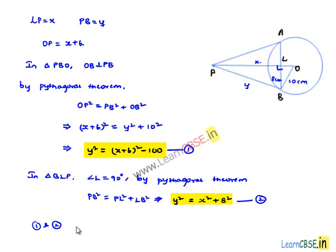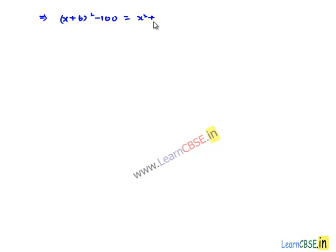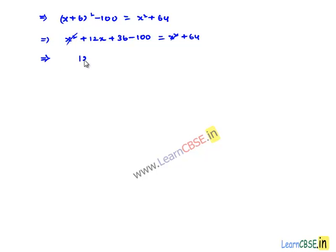Equating the right-hand sides: (x+6)² minus 100 equals x² plus 64. Expanding, x² plus 12x plus 36 minus 100 equals x² plus 64. The x² terms cancel, leaving 12x equals 64 plus 100 minus 36.